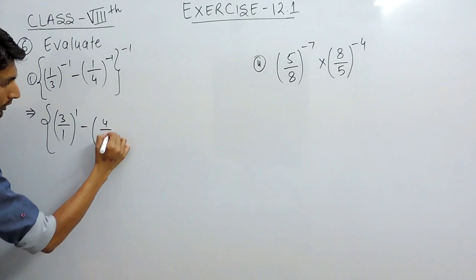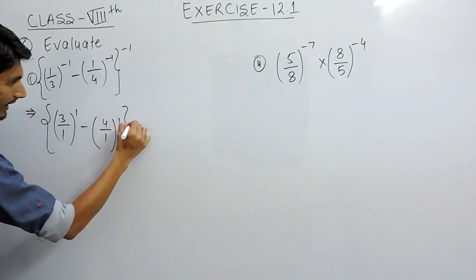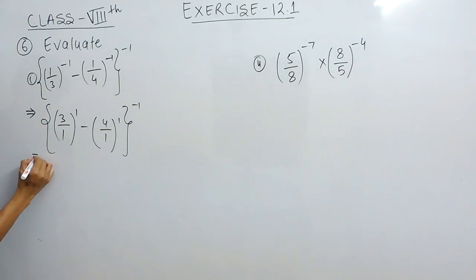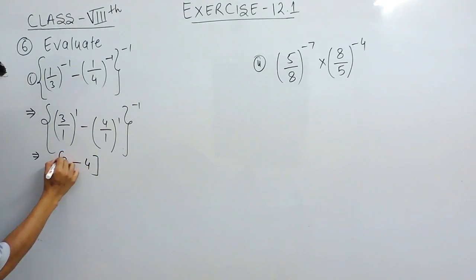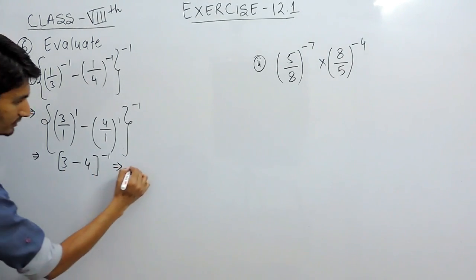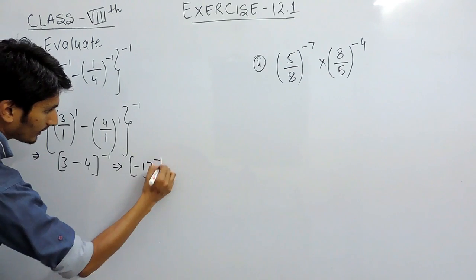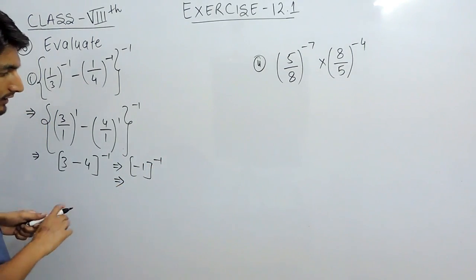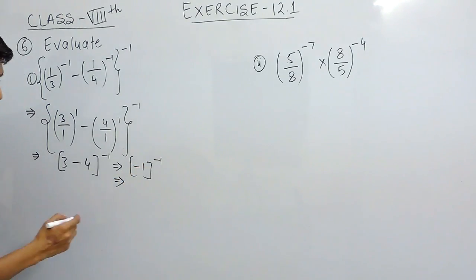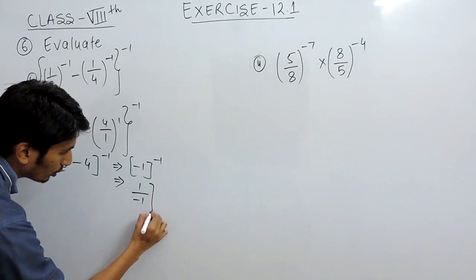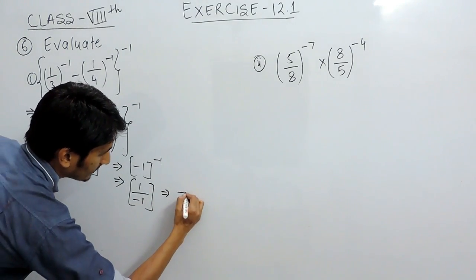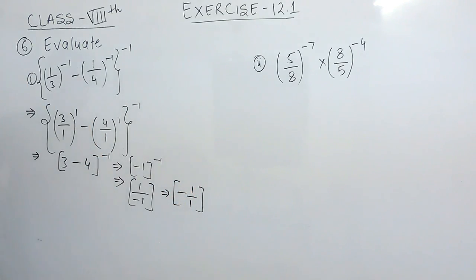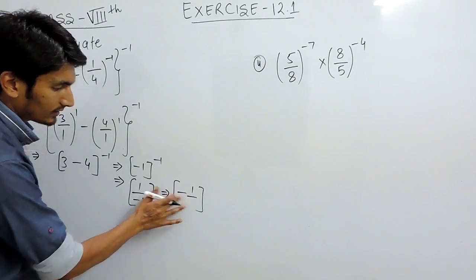Similarly, this also can be written as 4 upon 1 raise to power 1, whole raise to power minus 1. Now 3 raise to power 1 is 3, and 4 raise to power 1 is 4, and this raise to power minus 1. So 3 minus 4 is minus 1, raise to power minus 1. To convert this power into positive, we write it in the denominator, giving 1 upon minus 1, which equals minus 1. That should be the answer.